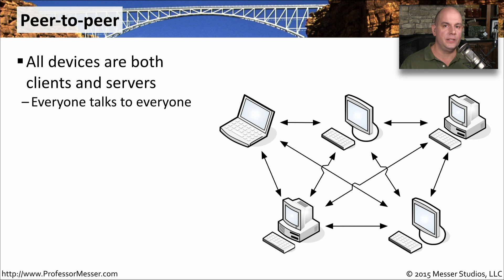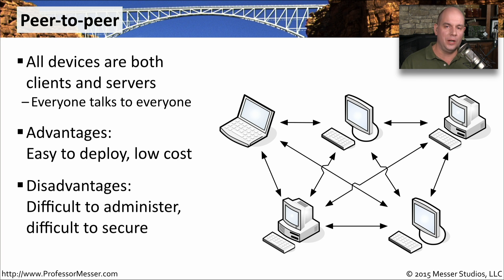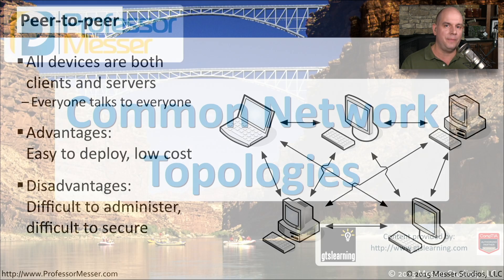Another popular application type is peer-to-peer. In this case, there's no central server at all — the different clients communicate between each other to perform whatever steps they need. Every device is able to talk to every other device. This is easy to deploy since everybody is probably on the network already, and there's a lower cost because you don't need a central server. The disadvantages are that it's much more difficult to administer since there's no central point, and you have to be careful about security — every device becomes both a client and a server, so you must keep all devices up to date and data as safe as possible.